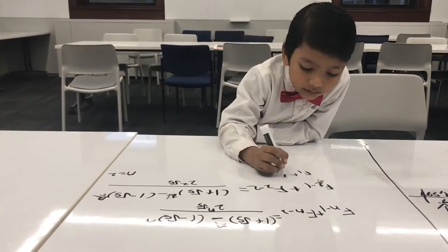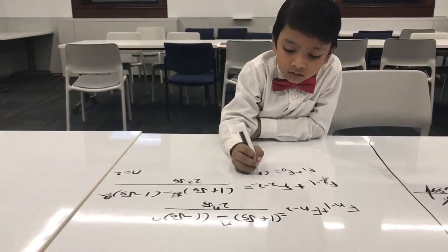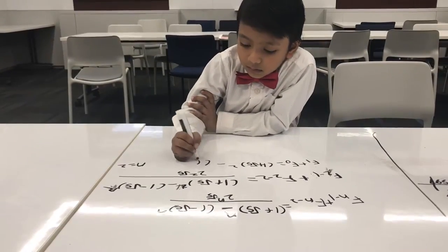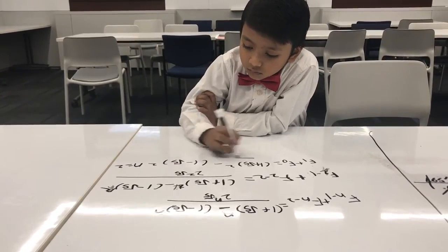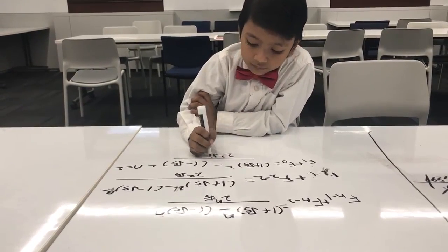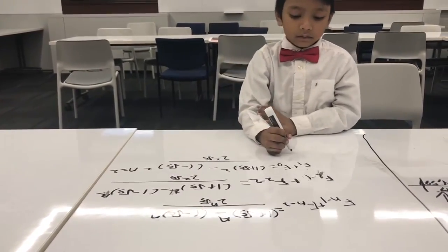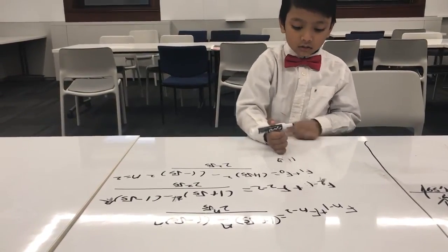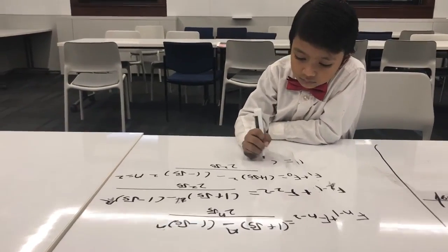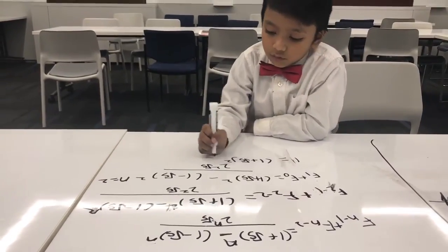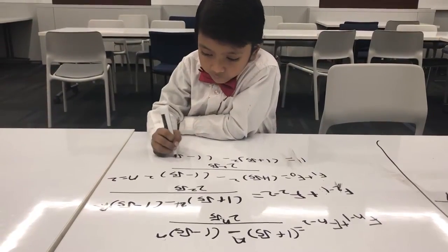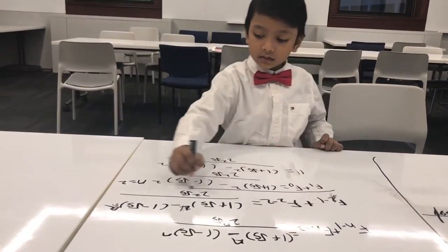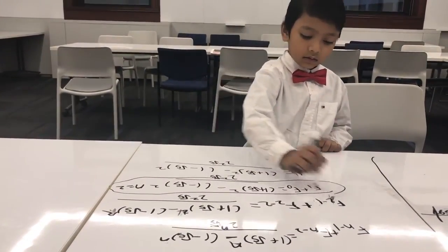So F2 minus 2 is F0, which equals 1 plus square root of 5 squared, minus 1 minus square root of 5 squared, over 2 squared times 5. That left side is 1 plus 0, which is actually just 1. So we need to show the right side also equals 1.